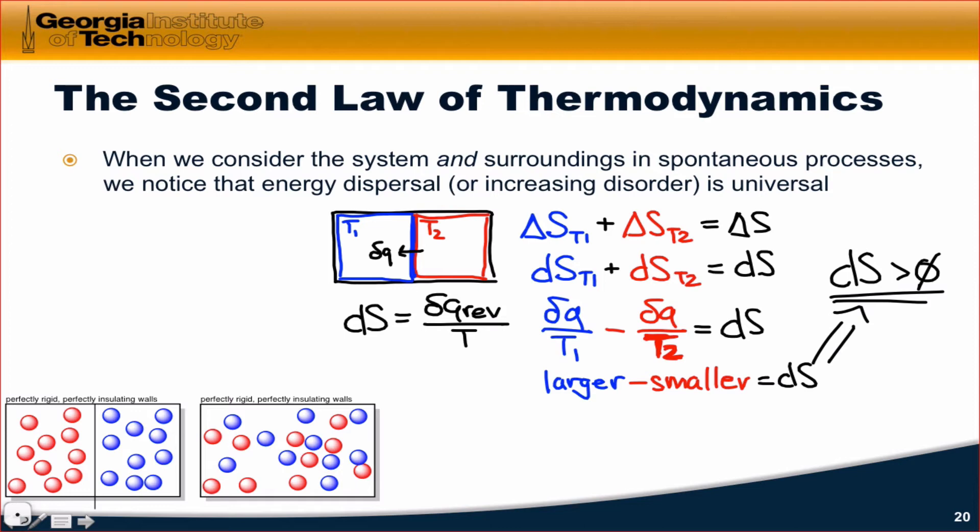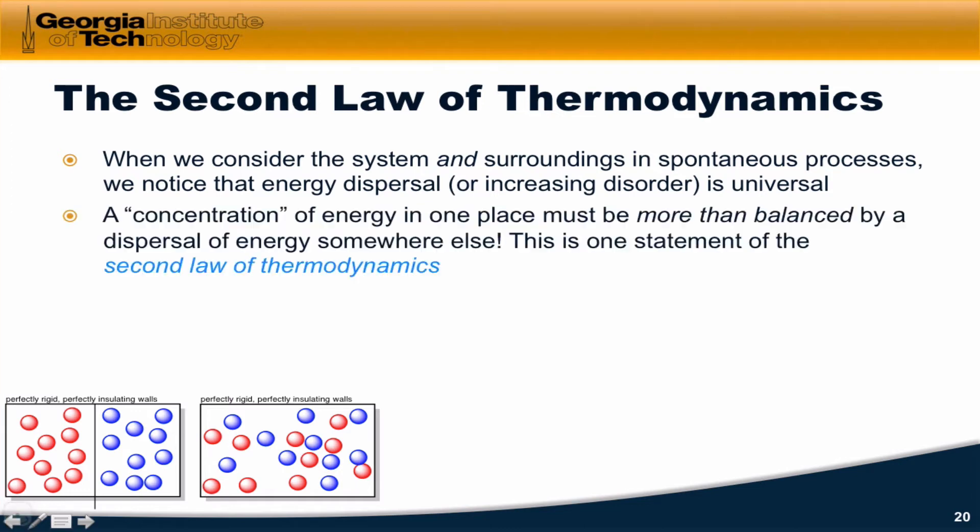Another way to think about this qualitatively is that the energy that is in a sense concentrated in T2 is becoming dispersed in T1 as the heat transfer occurs. More generally, a concentration of energy in one place must be more than balanced by a dispersal of energy somewhere else.